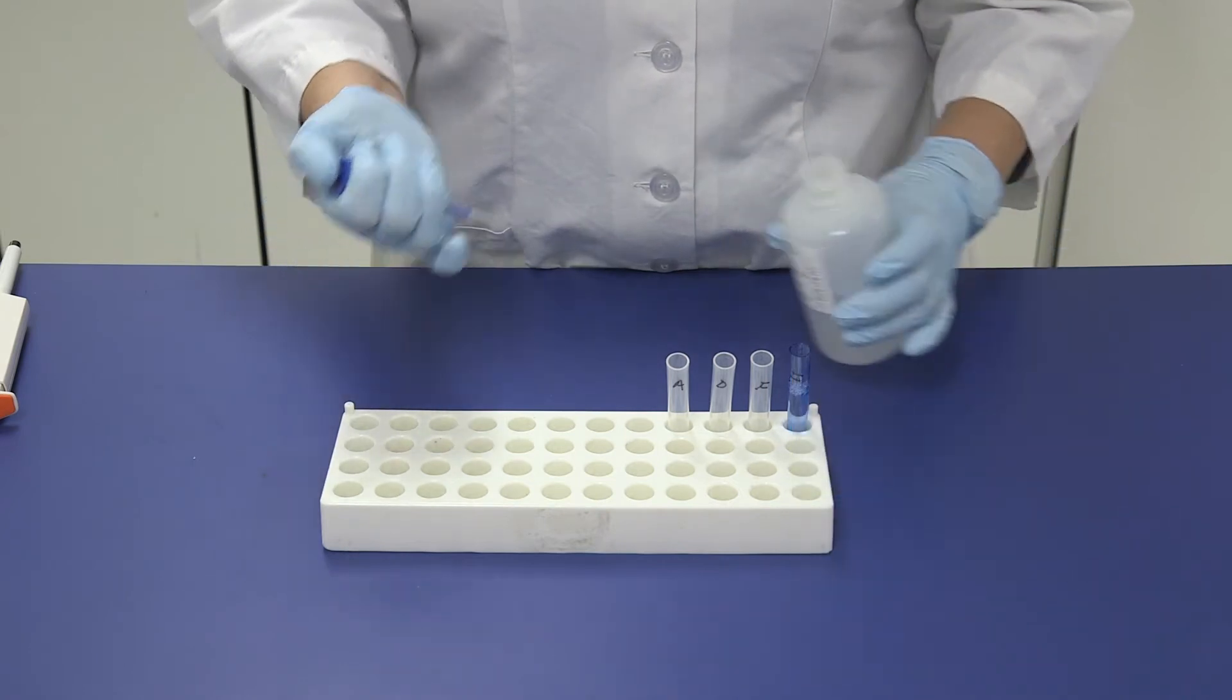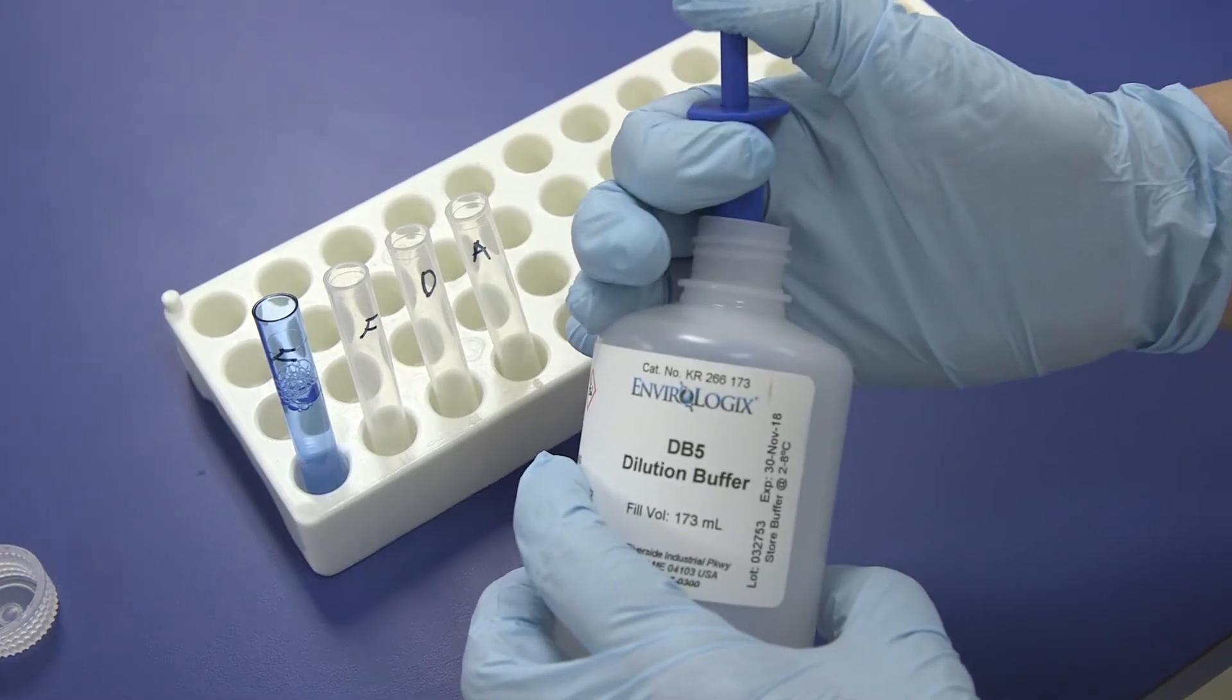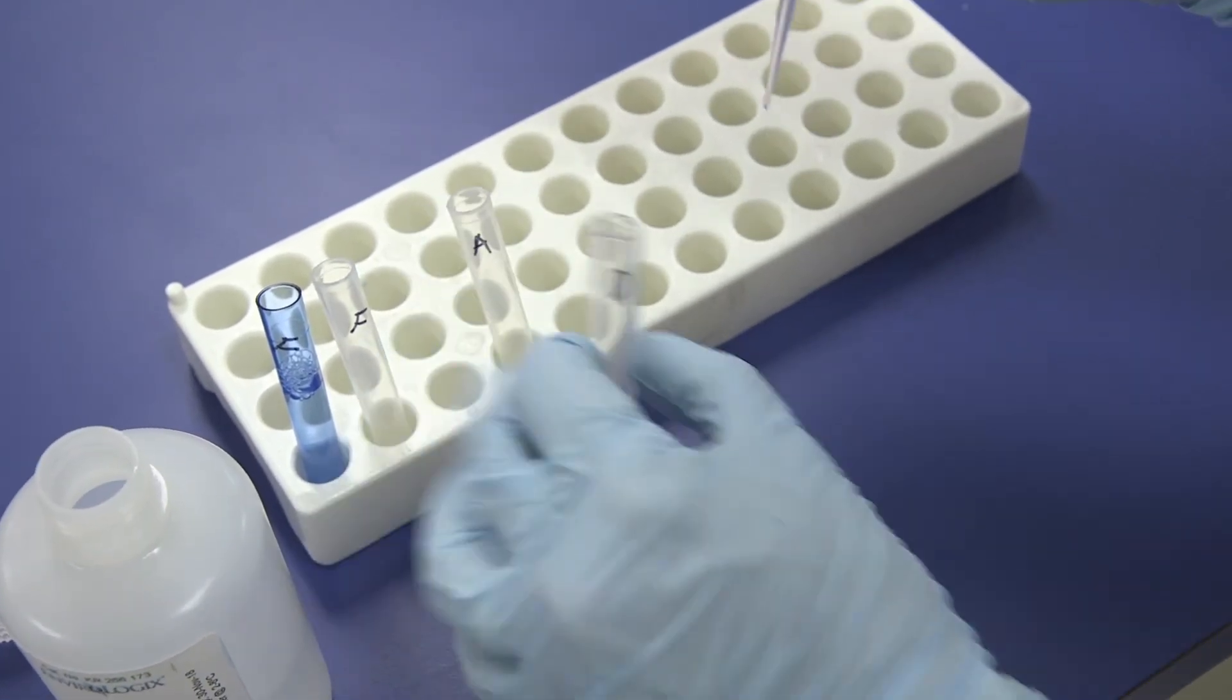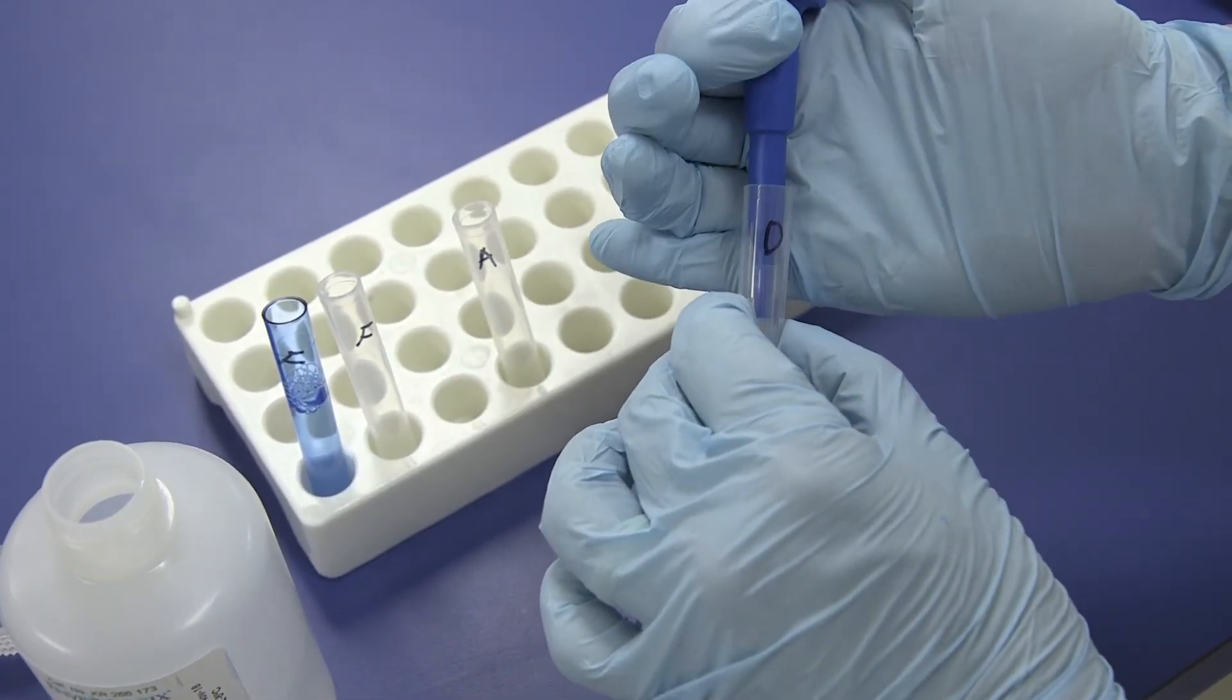Add one pipetteful of DB5 to the clear reaction tube labeled D and one pipetteful of DB5 to the clear reaction tube labeled A.